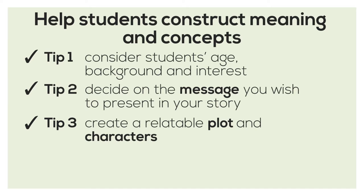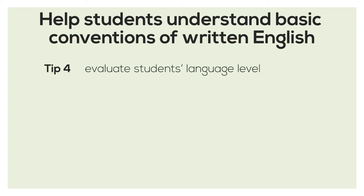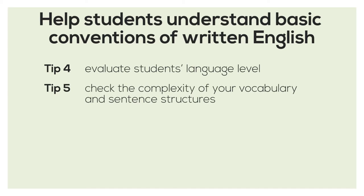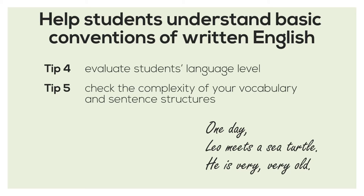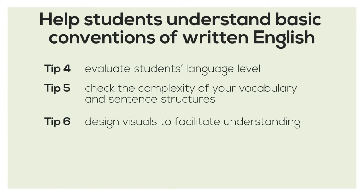One of our goals of teaching reading is to help students understand basic conventions of English, so you will need to evaluate your students' language level — that's our tip number four. Tip number five is that the sentence structures and vocabulary you use in the story must be appropriate for their level. Sometimes, no matter how simple the sentence structures and vocabulary are, students with lower proficiency still won't be able to understand simple words. So our last tip is that you need to carefully design the font size, colors, and graphics.